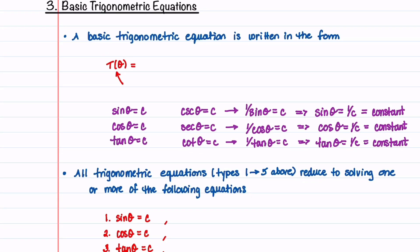All five of these trigonometric equations reduce to a basic trigonometric equation. A basic trigonometric equation can be written in the form t(θ) = a constant, where t(θ) is our trigonometric function.